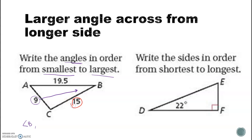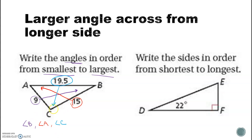The next side is across from angle A, so angle A will be next. Then my largest side is 19.5, which is across from angle C. So in order from smallest to largest, those are the angles. You can't tell me the exact measure of each angle, but you can tell which is smallest and which is largest. It also works in reverse.